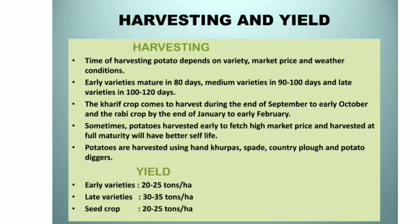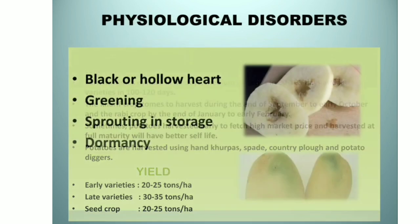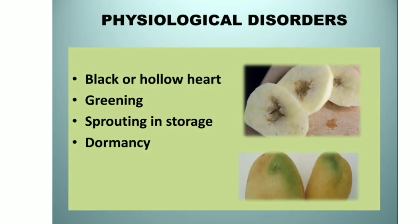Harvesting and yield: harvesting time of potatoes depends on variety, market price and weather conditions. Early varieties mature in about 80 days, medium varieties in about 90 to 100 days, and late varieties in 100 to 120 days. Kharif crops come to harvest during end of September to early October and Rabi crops by end of January to early February. Sometimes potatoes are harvested early to fetch high market price; those harvested at full maturity will have better shelf life. Potatoes are harvested using hand kurpas, spade, country plough and potato diggers. Early varieties yield 20 to 25 tons per hectare, late varieties 30 to 35 tons per hectare, and seed crops 20 to 25 tons per hectare.